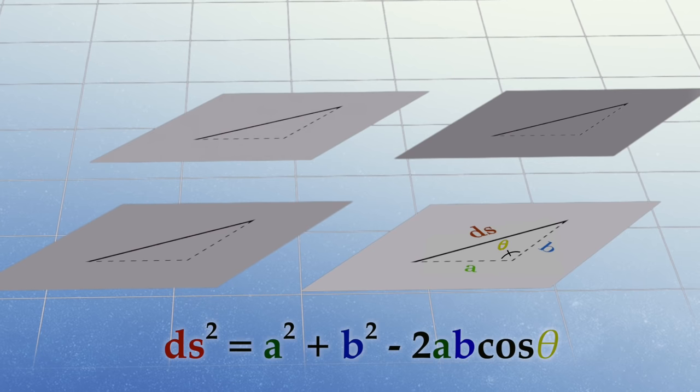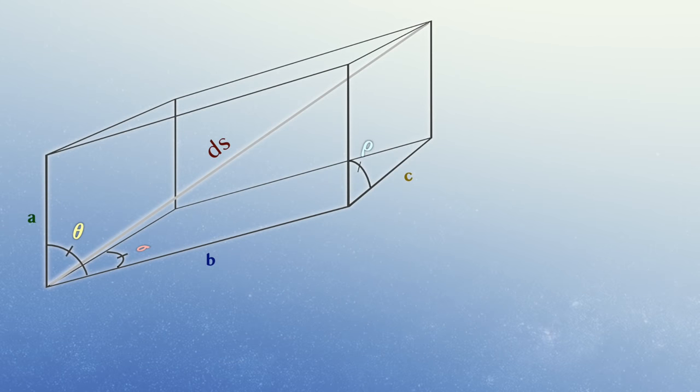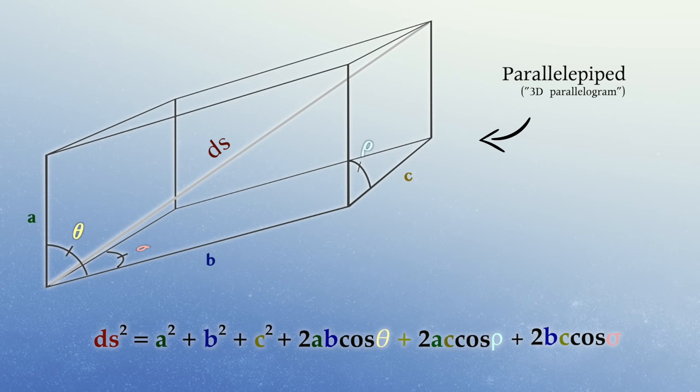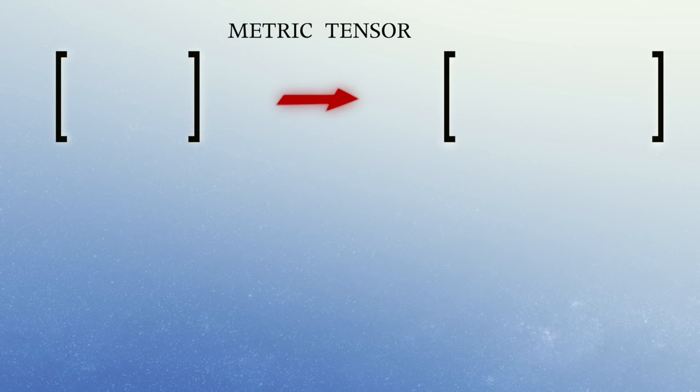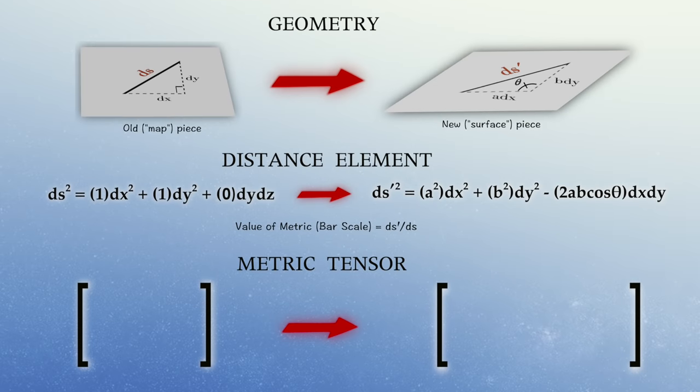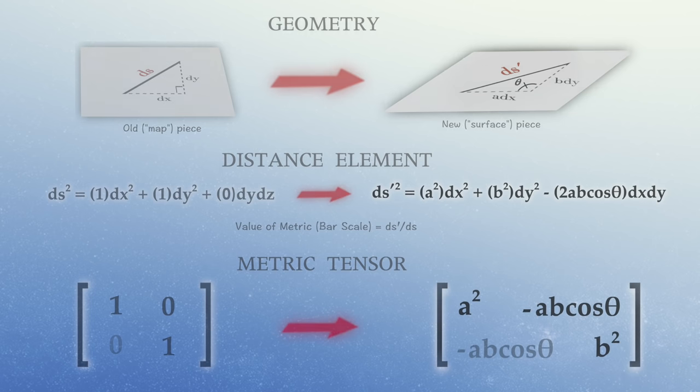to being described by the law of cosines, or one of its higher dimensional analogues. The components of the metric tensor are then just the various lengths and cosines of angles needed to determine the length of your new distance element.